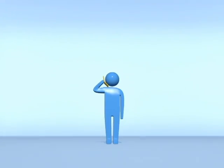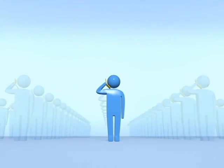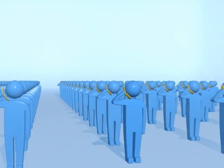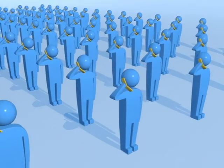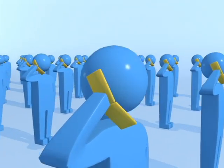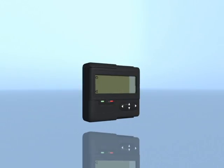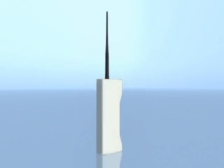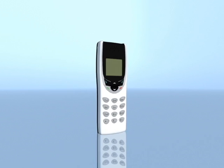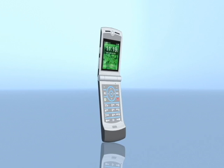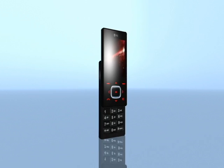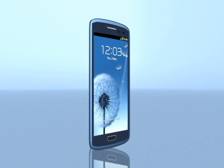Cell phones. Millions and millions of people use them. With a cell phone, you can talk to anyone on the planet from right where you are. The cellular phone has come a long way in today's society, from the pager, to the first flip phones, to the more advanced, and to the extremely high tech. The question is: how do cell phones work?